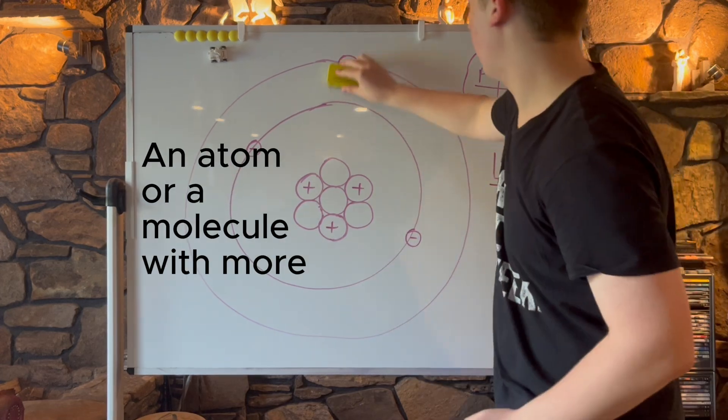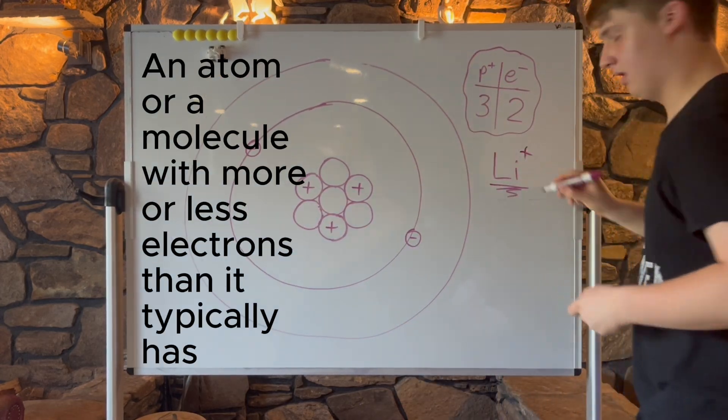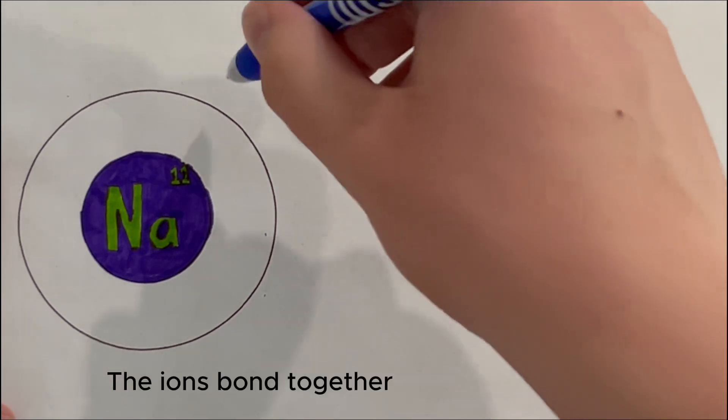First off, what's an ion? An atom or a molecule with more or less electrons than it typically has. You see, when a chlorine atom steals electrons from sodium, the ions bond together.